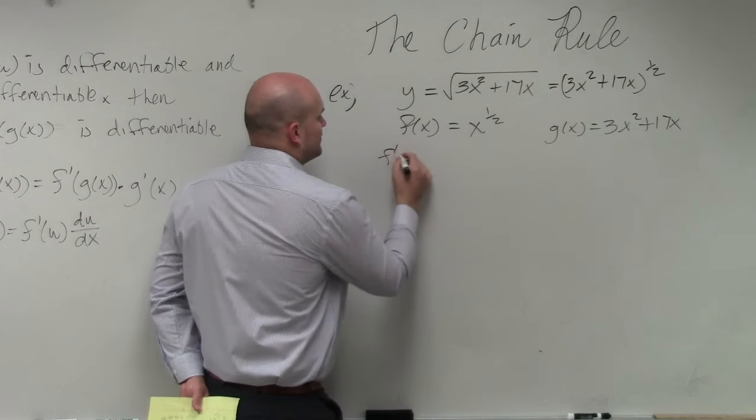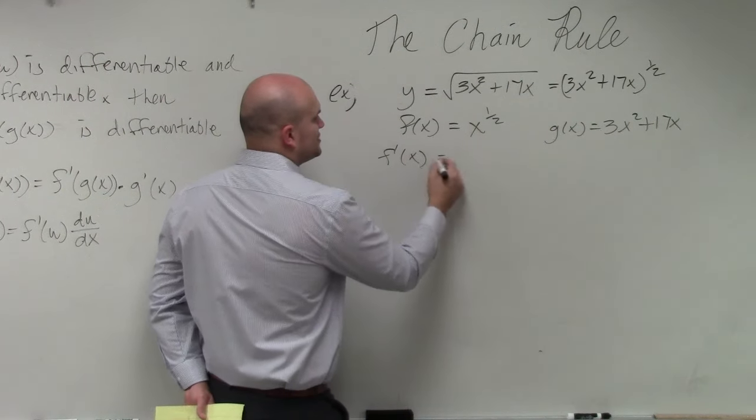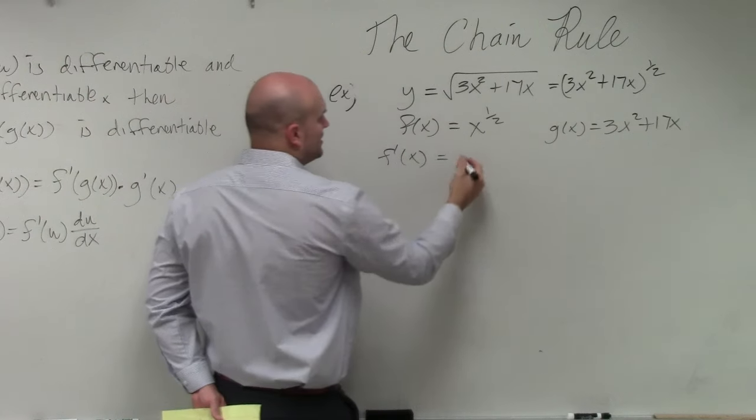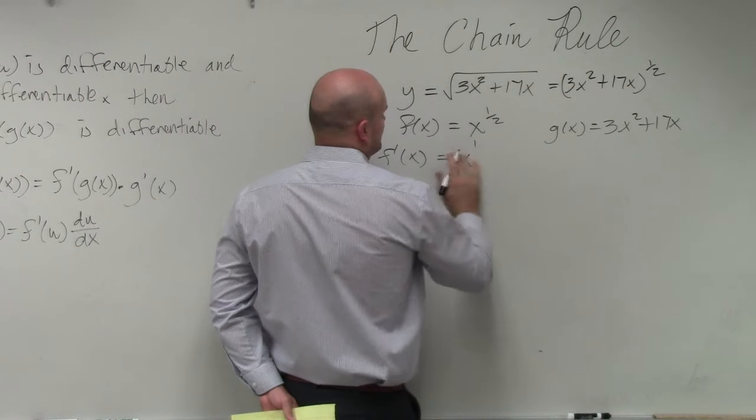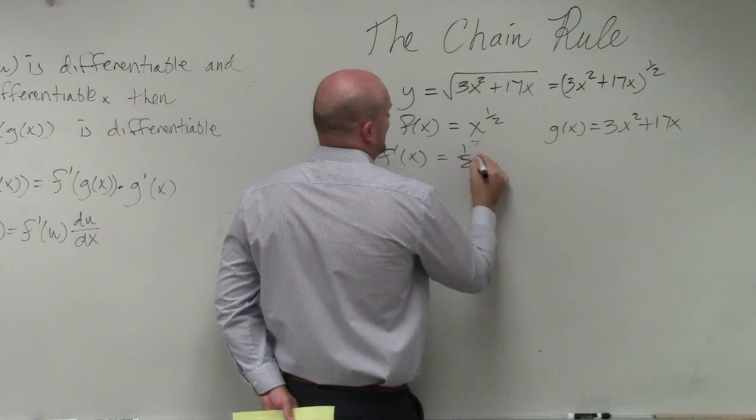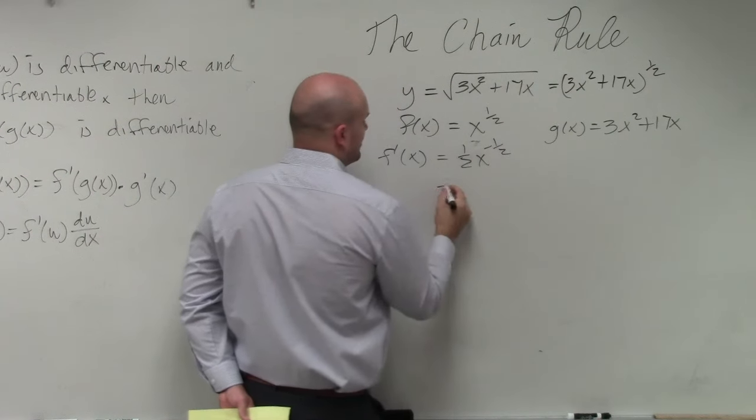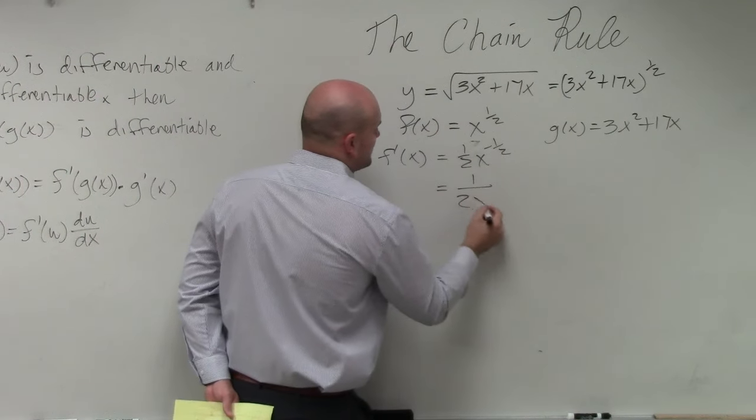f prime, we've been doing quite a bit of these, so you should see bring down the 1, subtract 1. That's going to be one half x to the negative 1 half, or 1 over 2 x to the 1 half.